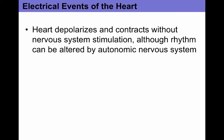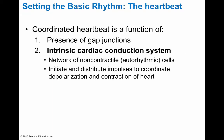The electrical events of the heart: the heart actually depolarizes and contracts without nervous system stimulation at all. The rhythm can be altered by the autonomic nervous system, but it's not initiated by it. The heartbeat setting this basic rhythm is due to the presence of gap junctions, and it's initiated through what's called the Intrinsic Cardiac Conduction System.